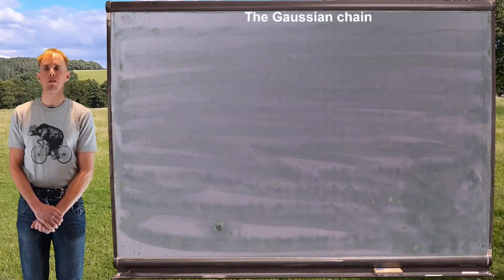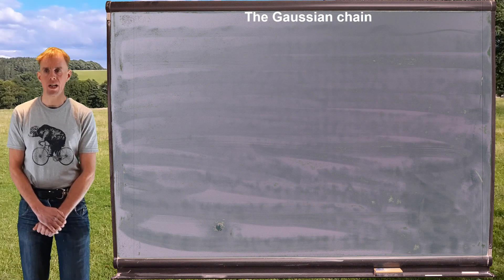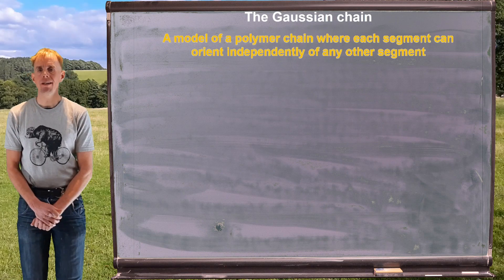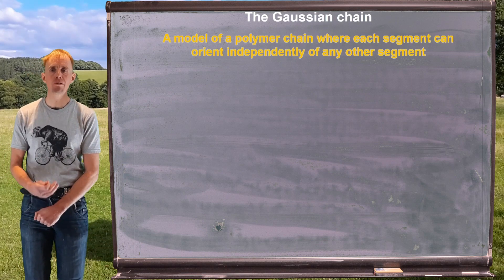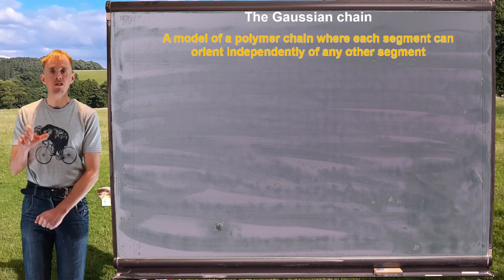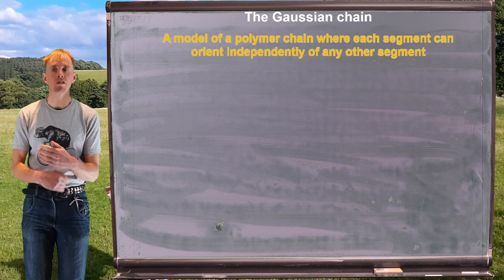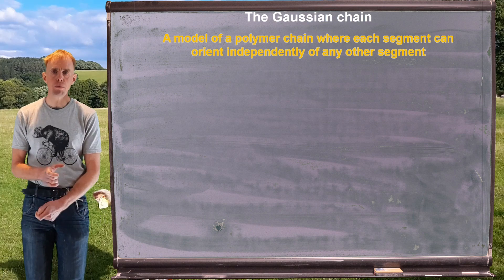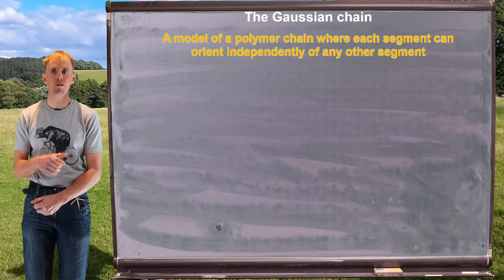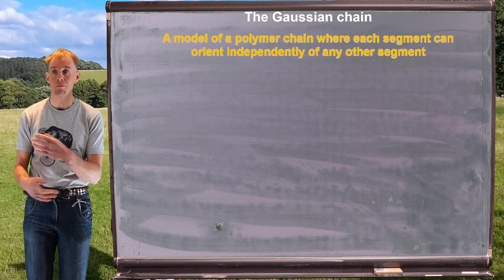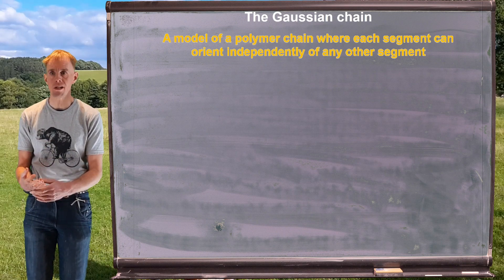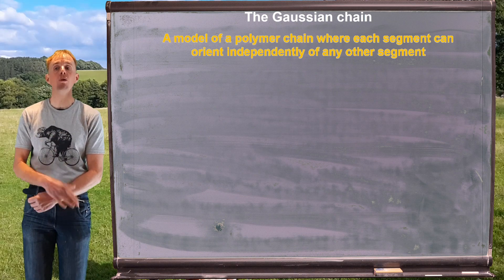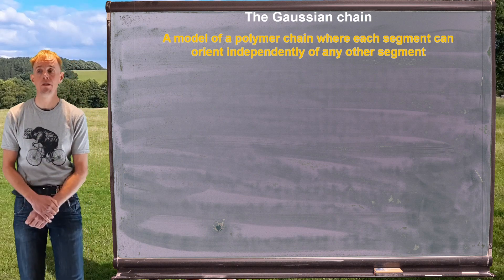We're going to examine something called a Gaussian chain, and a Gaussian chain is a model of a polymer chain where each segment of the chain can orient completely independently of any other segment. Let's put this in context, both in terms of explaining what we mean by segments and orientation, and by comparing whether or not this is realistic for a real material.